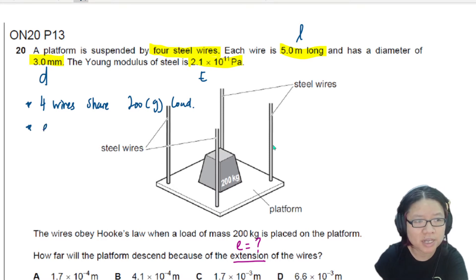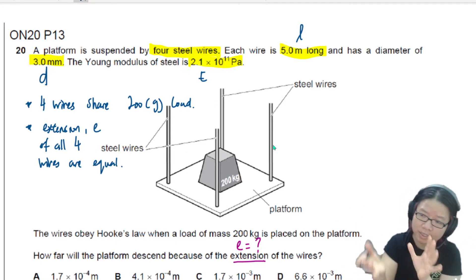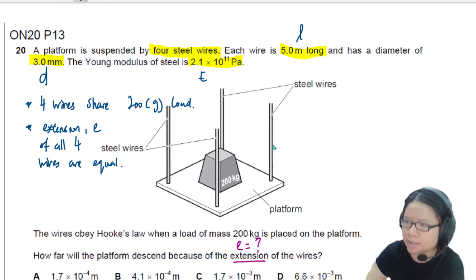And number two, the extension E of all four wires are the same. Are equal because it's a platform, right? And they're equally shared out. If not, they will be tilted and that's an inclined plane, not a platform.